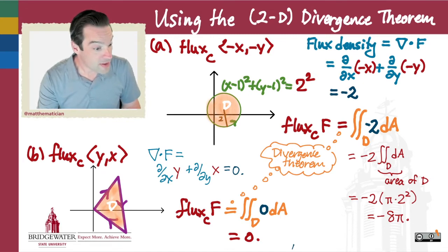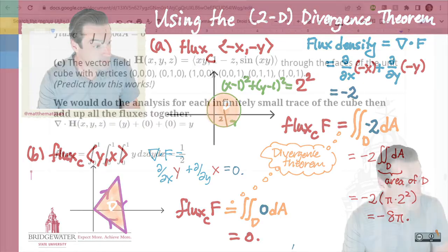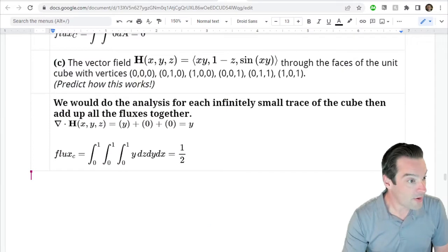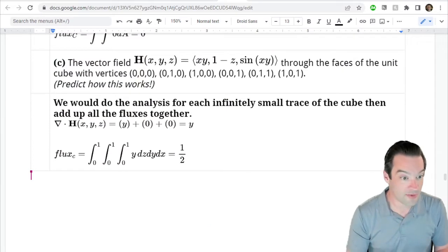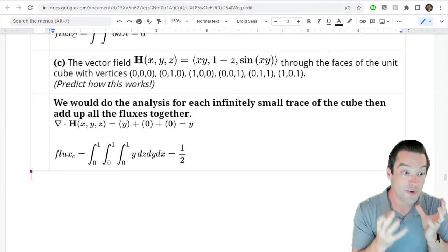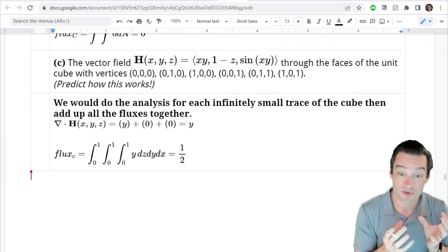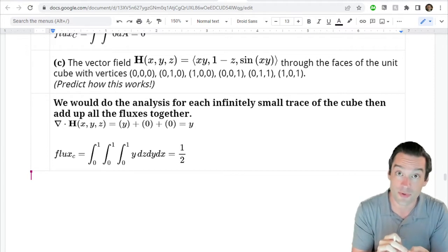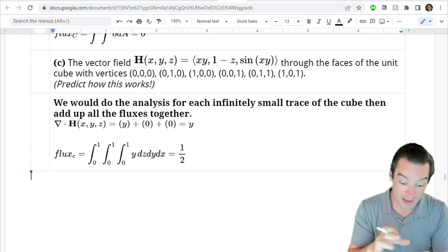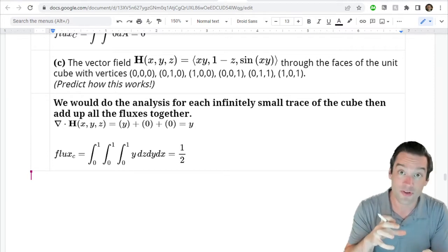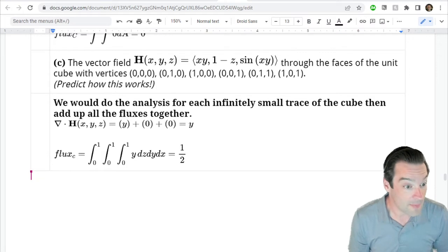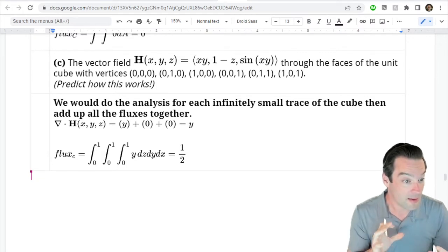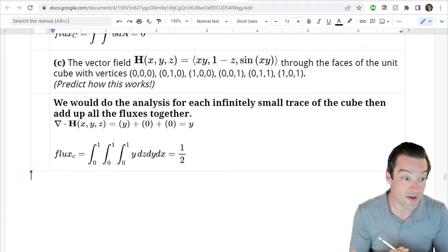For the three-dimensional example, suppose we want to take all six faces of the unit cube situated with one corner at (0, 0, 0) in three-space and residing in the first octant. We want to find the outward flux of a three-dimensional vector field through those six faces.